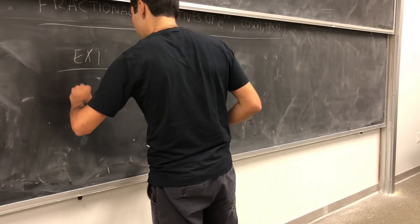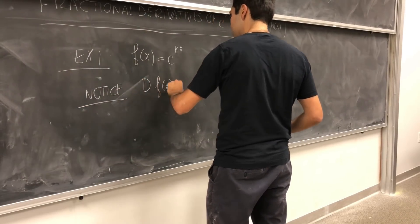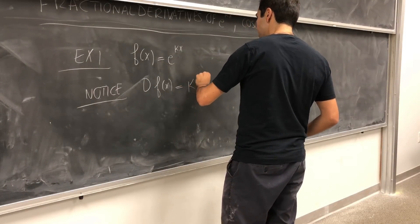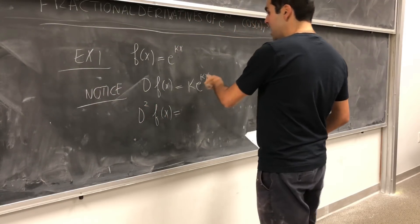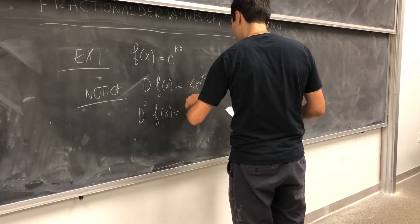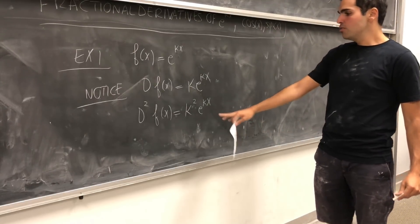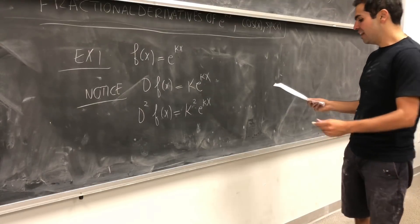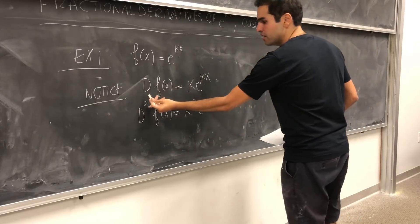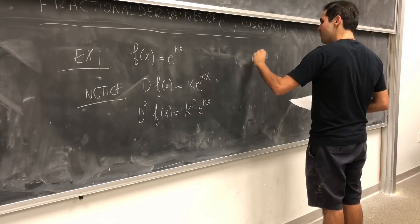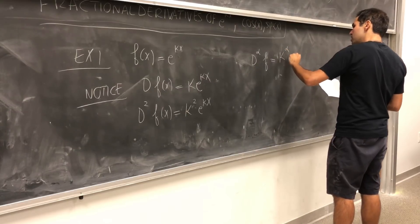Notice we have the following: suppose we differentiate this. The derivative would be k·e^kx. Suppose we differentiate again: d² gives k², so k²·e^kx. And if you continue like that, you get k³·e^kx, et cetera. And in fact, this would also hold if the differentiation is fractional. If you take the alpha derivative of f, that would be k^α · e^kx.